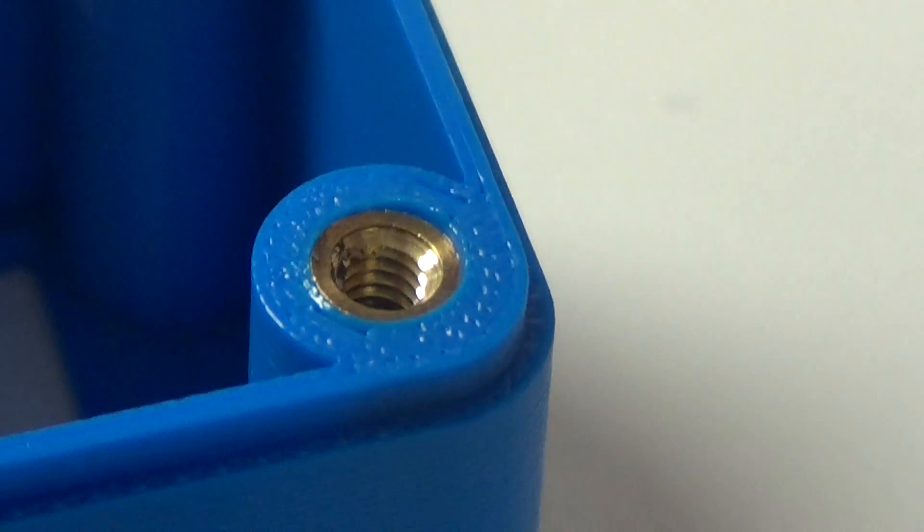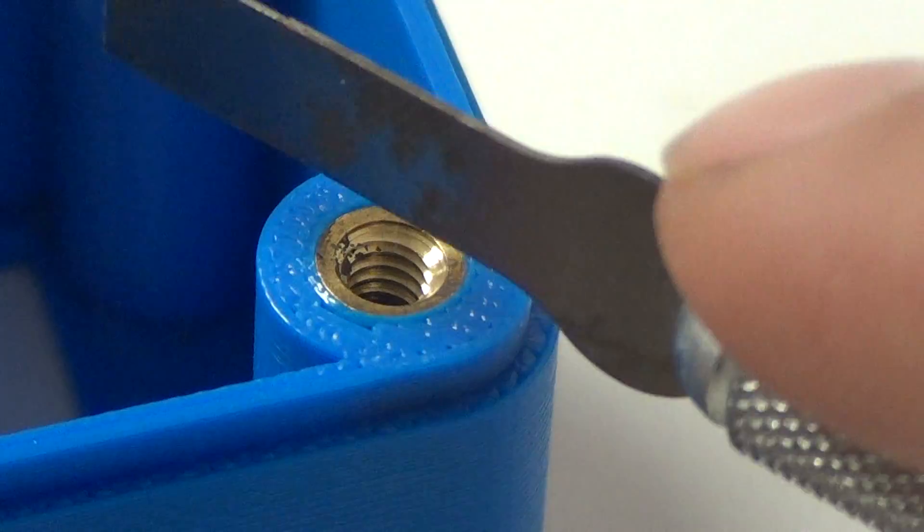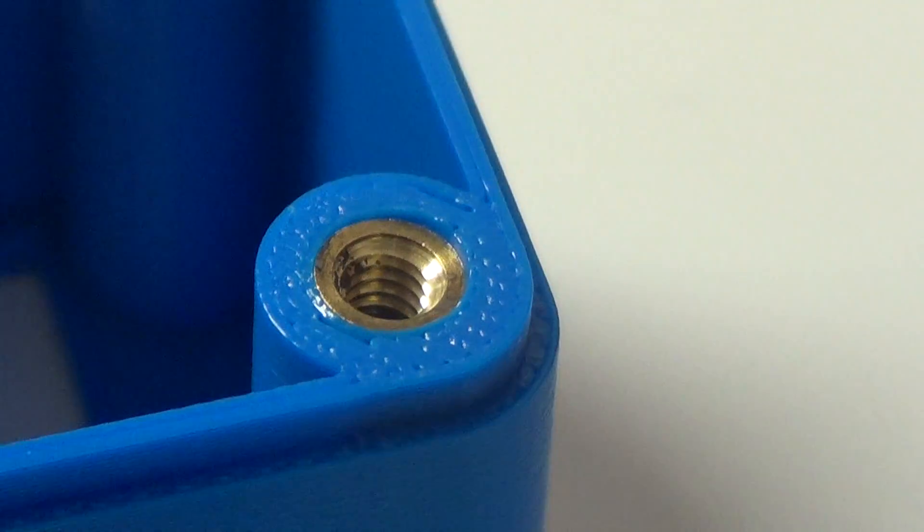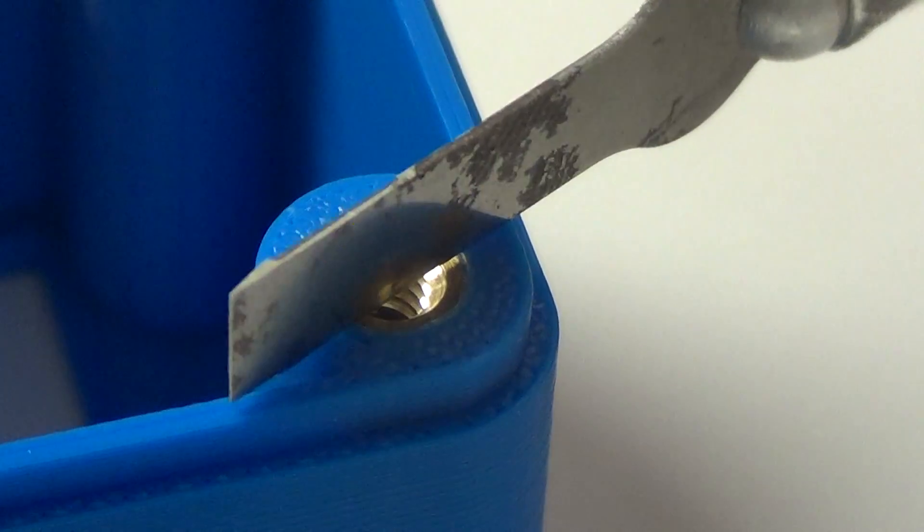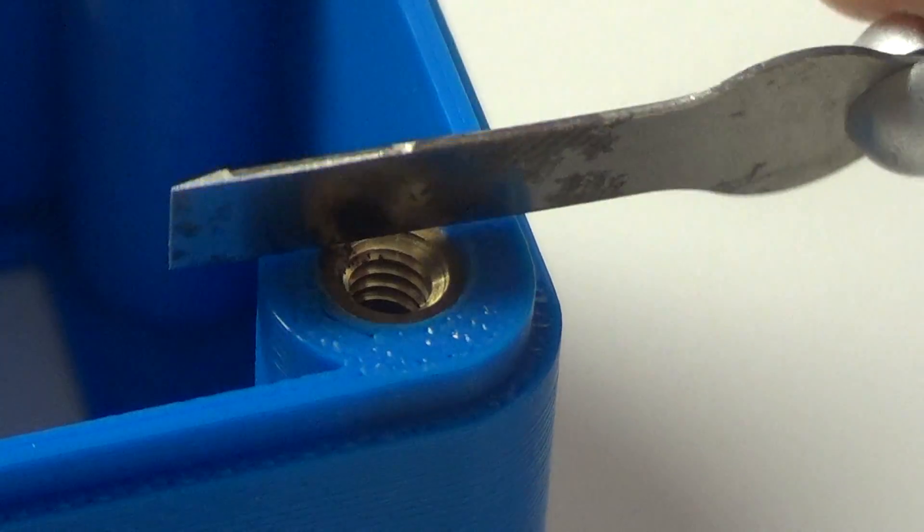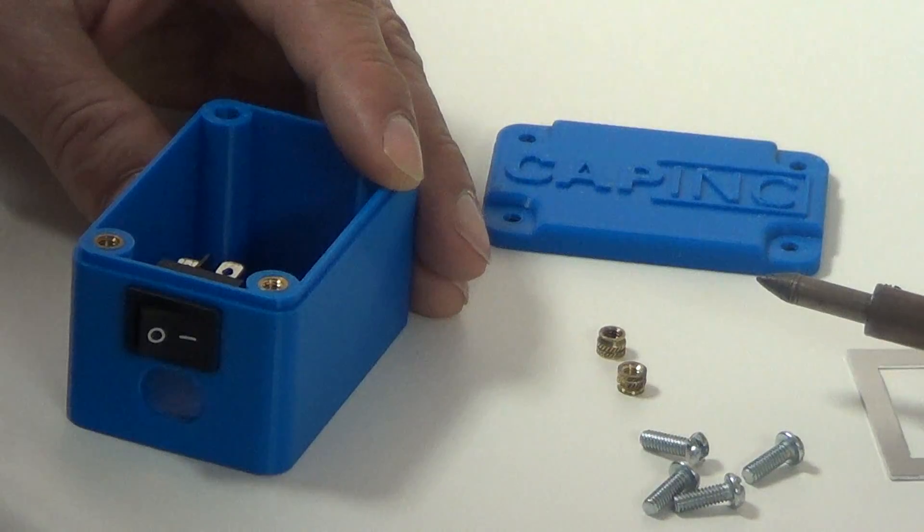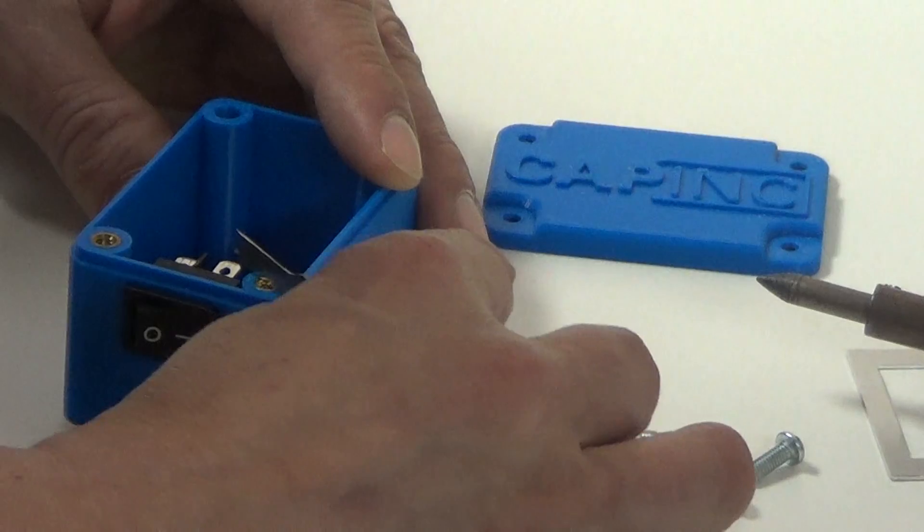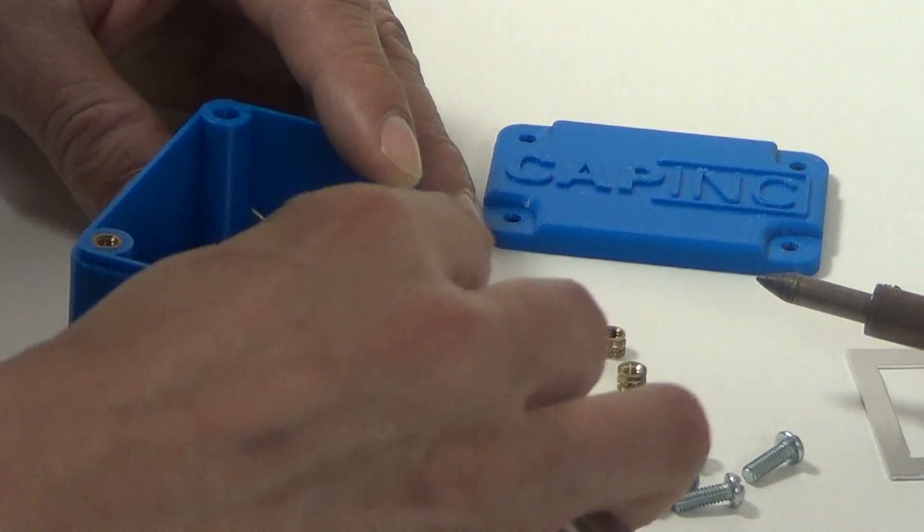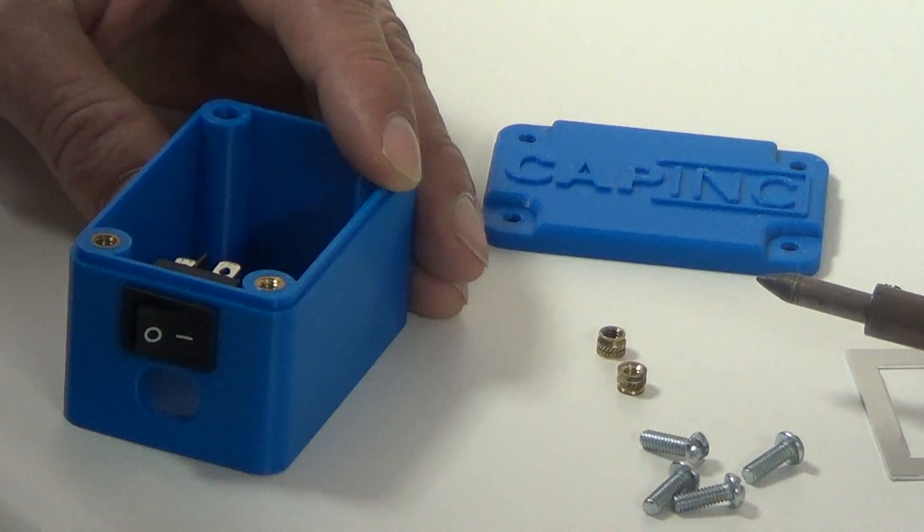Once it's flush with the surface, I'll use my X-Acto blade to put an X over it to make sure it's nice and flush. Then I can also use this to trim away any extra material there. I'll usually just kind of go back and check like this and make sure it's nice and flush until it cools down.